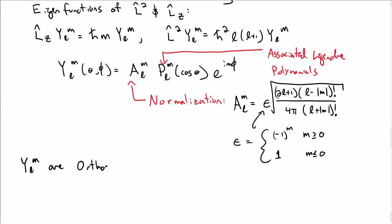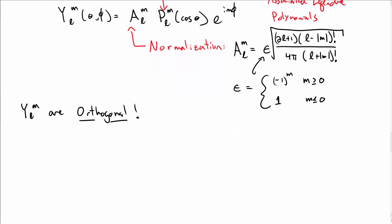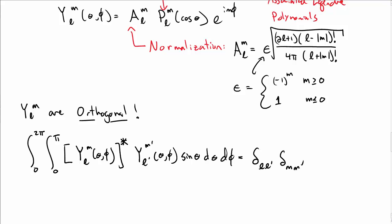What is kind of nice is that the Y_lm are actually orthogonal. Of course, what do we mean by orthogonal? Well, we mean when you do a particular integral, and what we mean is if you integrate from 0 to 2π and 0 to π of the complex conjugate of Y_lm times Y_l'm' times sin θ dθ dφ. So that should give you 1 or 0. It'll give you 1 if both l and l' and m and m' are equal, or 0 if any of them are not the same, which is our usual definition of orthogonal.